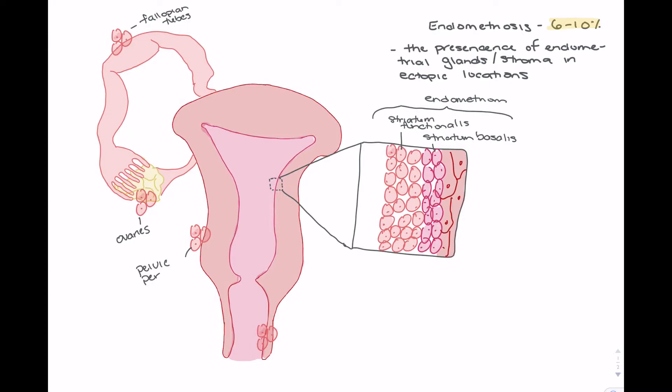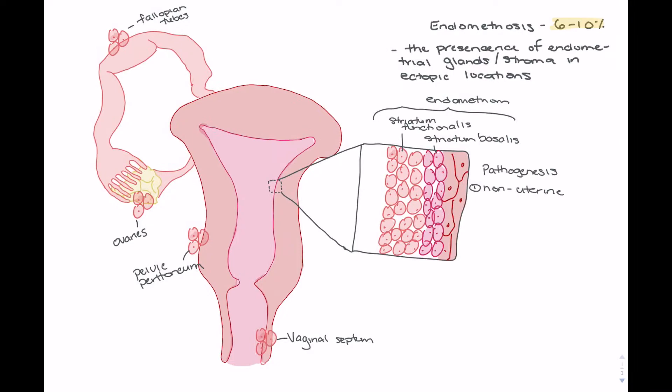Although the fallopian tubes, the ovaries, the pelvic peritoneum, and the rectovaginal septum are going to be the most common areas in which we're going to see the growth of this endometrial tissue in endometriosis. Now that we have an idea of where the endometrial tissue can actually grow in endometriosis, we're going to talk about the pathogenesis.